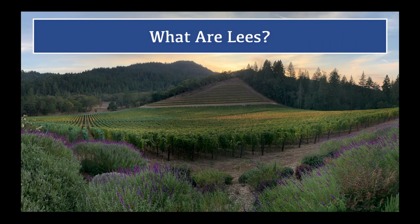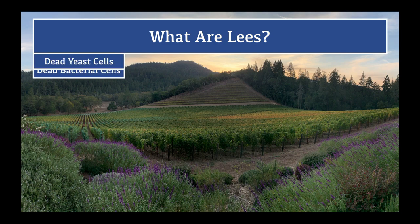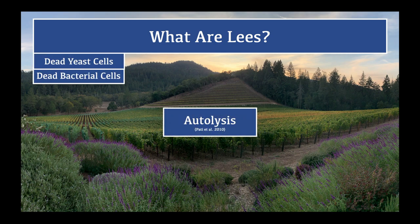Aging on lees is a commonly used term, and it's easy to say it so much that you forget what it actually means. So what exactly are lees? Lees is the accumulation of dead yeast and bacterial cells due to autolysis, which is the natural and slow breakdown of yeast cells caused by hydrolytic enzymes.